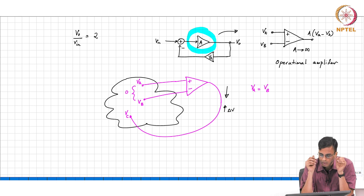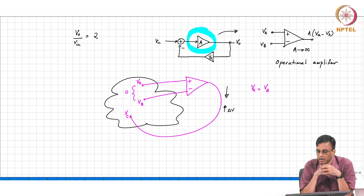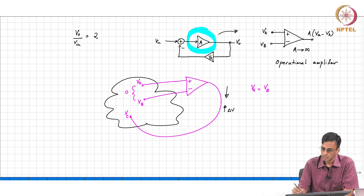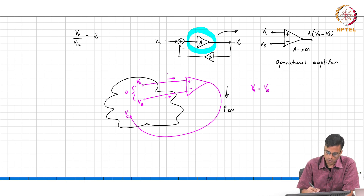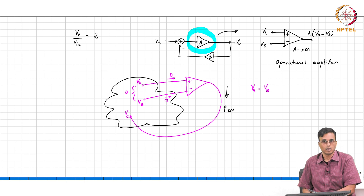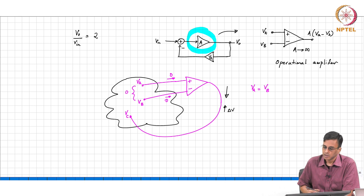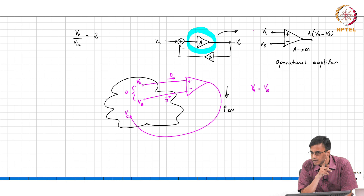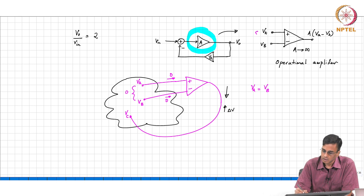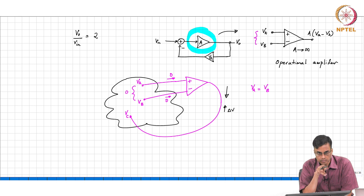The op-amp is a voltage controlled voltage source. So what comment can you make about the current flowing in? The current flowing in is zero. Therefore, if the op-amp is embedded in a negative feedback loop, the potential difference between the two inputs of the op-amp is zero, and the current flowing in is zero.